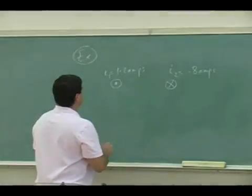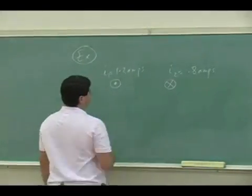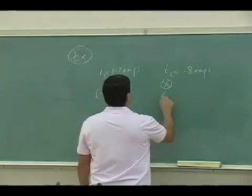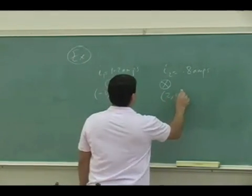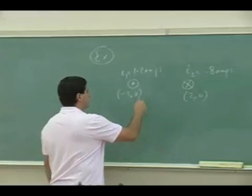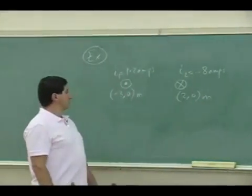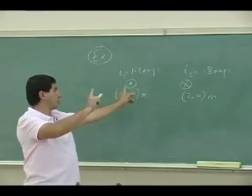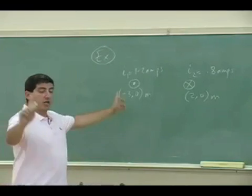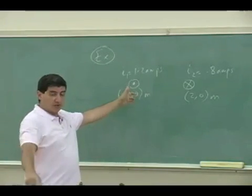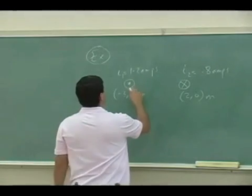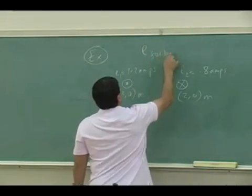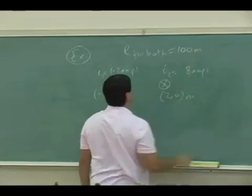I have to give the positions of these as well. Let's say this is negative 3, 0 and then this one is at the position 2, 0 on the coordinate axis. This is meters, this is meters. And let's say their length along the z direction is a hundred meters, so we'll make them long enough to where we could use that formula. So their length L for both is hundred meters.